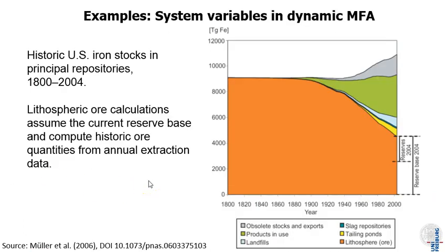So what can we do with these data? Here's an example of a study conducted by Daniel Müller who quantified the iron stocks in the US in different compartments. The big red part here is the iron in the lithosphere, so in iron ores, and the green one is the iron that's actually in use.